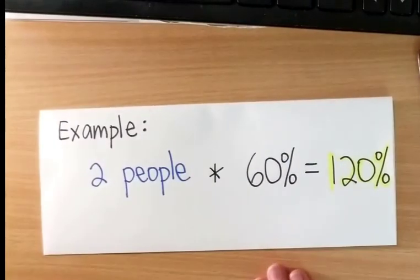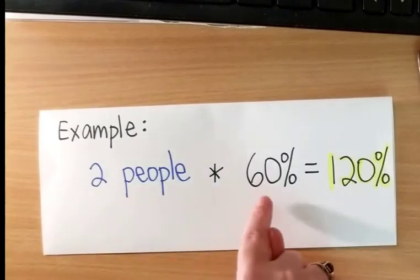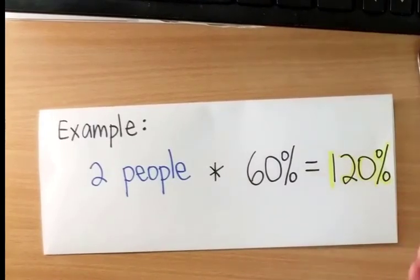Let's do an example. If you have two people allocated to 60% of their workday, you actually are working on that task for 120% of a workday.